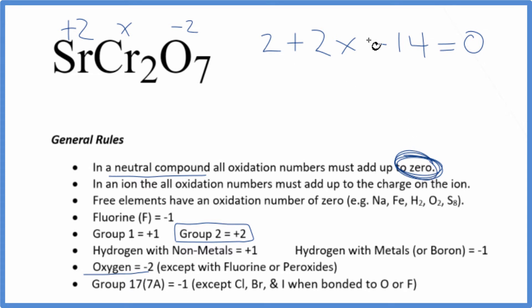Does everything add up to zero? So now we can just solve. Two x minus 12, that'll equal zero. Two x equals 12, and then x, that's gonna equal a positive six.